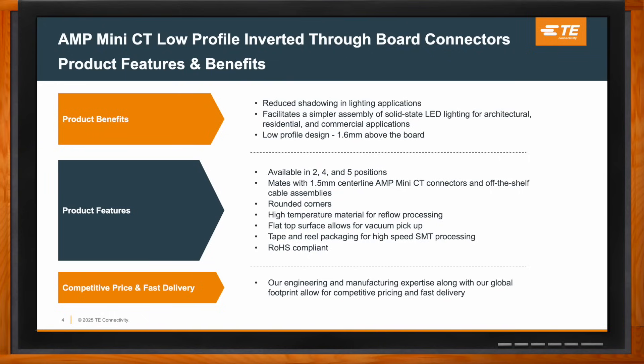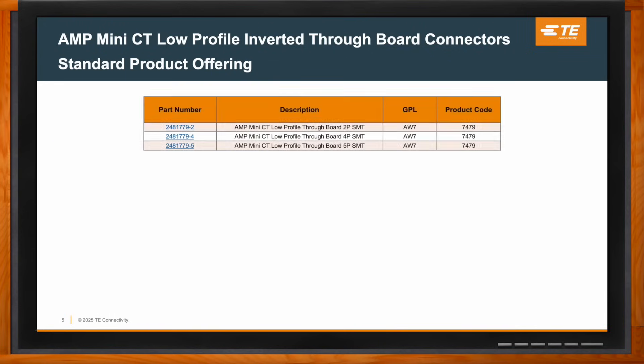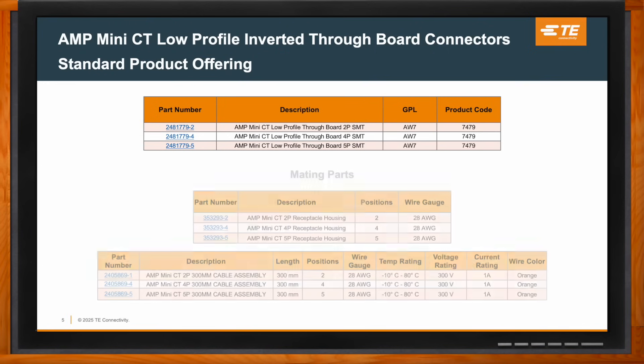What specific part numbers should we be looking for? This new product includes three new part numbers. We have part number 2481779-2 for the two position offering, -4 for the four position, and -5 for the five position. The mating Mini CT 1.5 millimeter centerline connectors are part numbers 353293-2, -4, and -5. The off-the-shelf cable assembly part numbers are 2458691-1 for the two position, -4 for the four position, and -5 for the five position.